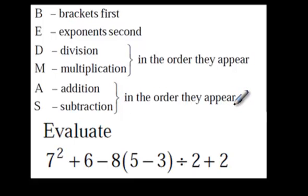So, enough talk. Let's try a question right here. It says 7 squared, and remember 7 squared does not mean 7 times 2. It means 7 times 7, okay? Plus 6, minus 8, bracket, 5 minus 3, bracket, divided by 2, plus 2.